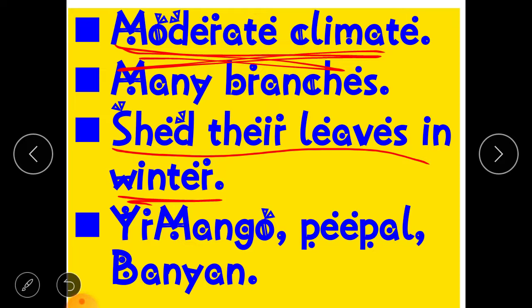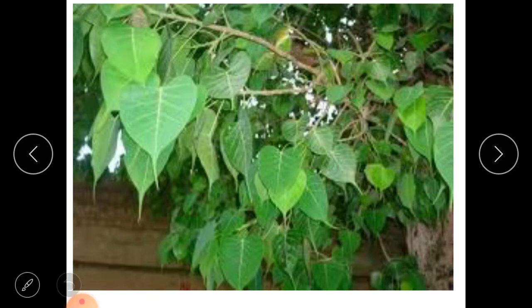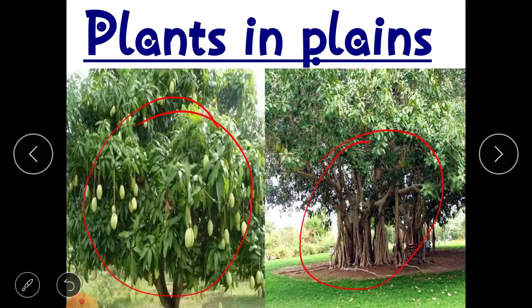In the months of December and January, these trees have no leaves. They shed their leaves to protect themselves from the severe cold. Examples are mango, peepal, and banyan trees, which you can generally see in plains.